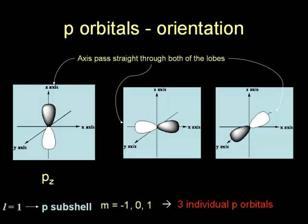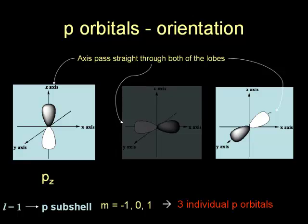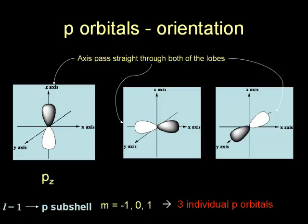In the one in the middle, you will notice that the X axis passes straight through both of the lobes.